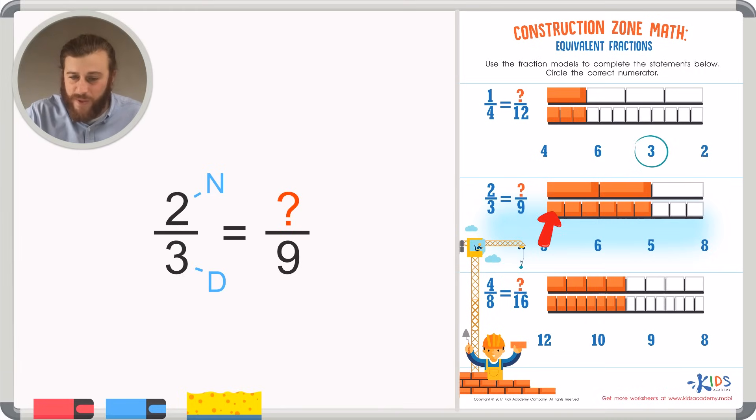There is one, two, three, four, five, six pieces shaded in, which means six is the correct numerator. Two-thirds is equivalent to six-ninths. But we can see that two-thirds and six-ninths take up the exact same amount of space. So six must be the correct numerator.